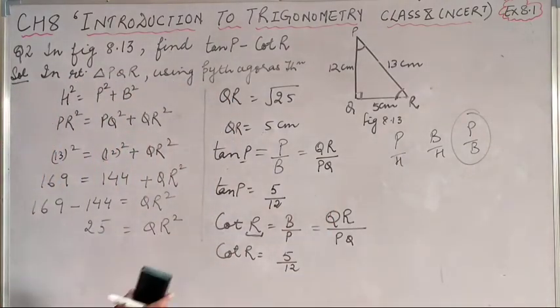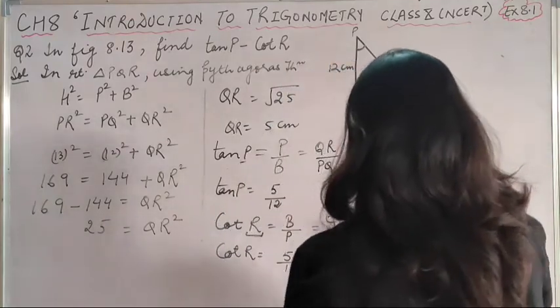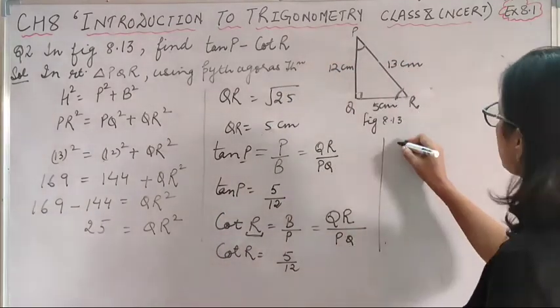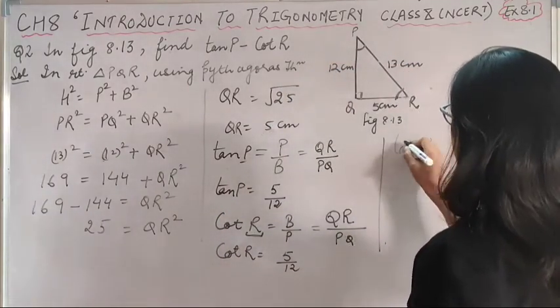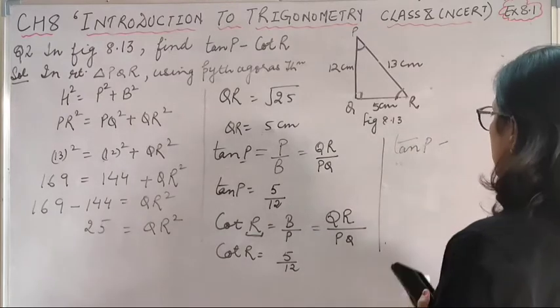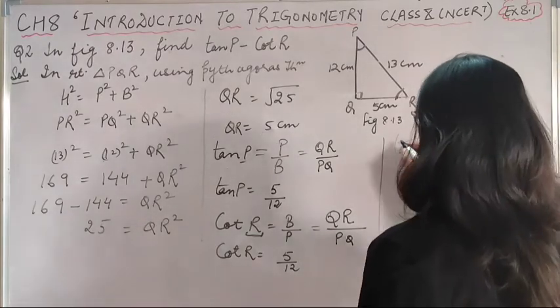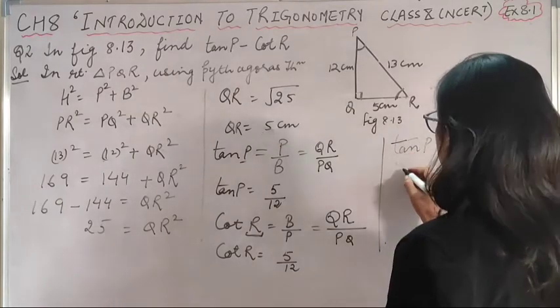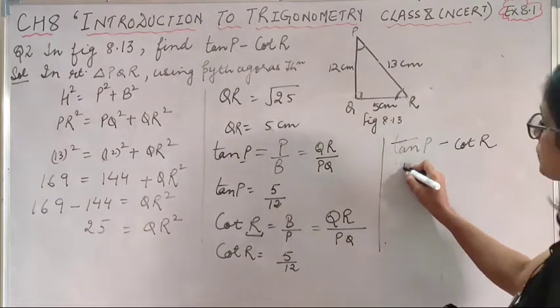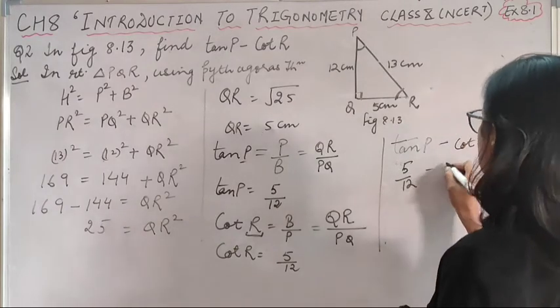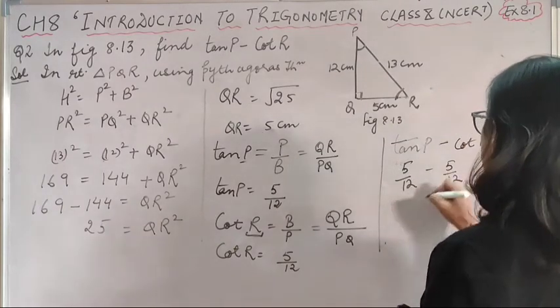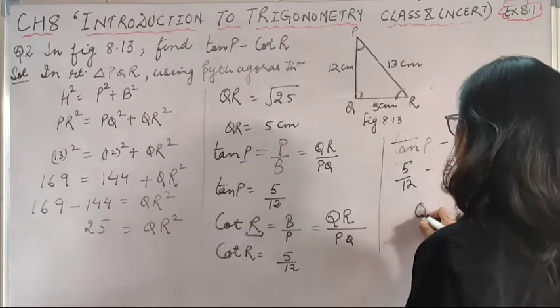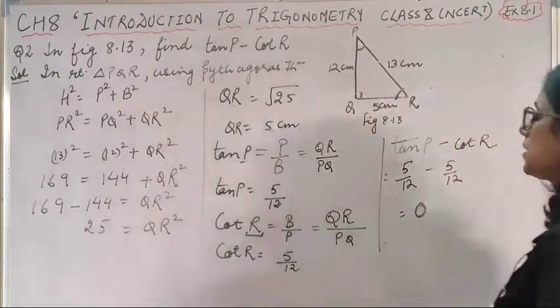Now I'm going to find tan P minus cot R. Tan P is 5 by 12, and cot R is also 5 by 12. Here we have cancel out and the answer will be 0. So the answer is 0.